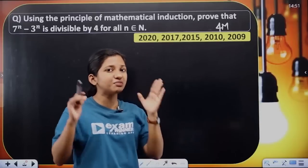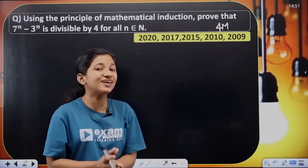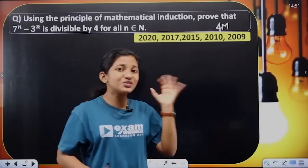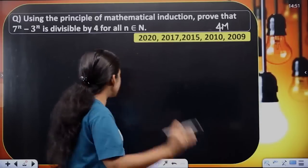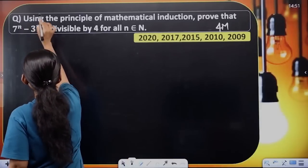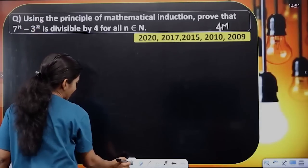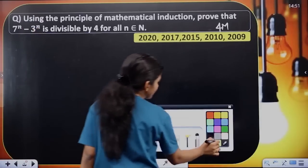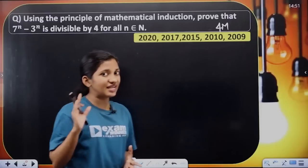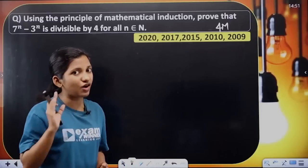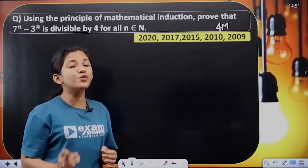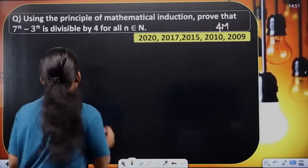If you think about this question, this question is important. So in the first step, we have 7 raised to n minus 3 raised to n. The first step is to prove P of 1 is true.